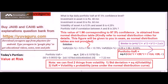What is the daily portfolio VAR — Value at Risk — at 97.5% confidence level? Investment in Asset A is 40 million, and Asset B is 60 million. Here we have to find out the portfolio VAR. A portfolio consists of 2 to 3 assets; in this example it is taken for 2 only. So these are the 2 investments.